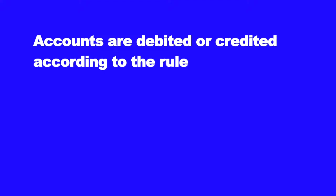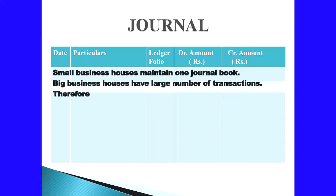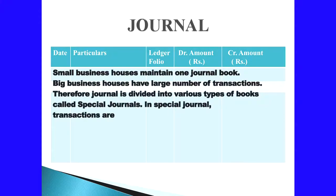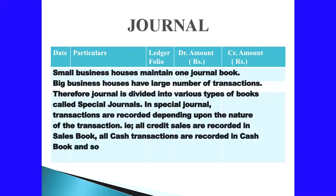We have to follow certain rules while recording. Accounts are debited or credited according to the rules of debit and credit. The process of recording transactions in the journal is known as journalizing. Small business houses maintain one journal book. Big business houses have large number of transactions, so the journal is divided into various types of books called special journals. In special journals, transactions are recorded depending upon the nature of transaction — all credit sales in the sales book, all cash transactions in the cash book, all credit purchases in the purchases book, and we also have bills receivable book and bills payable book.